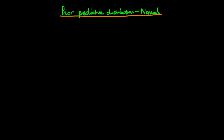In this video, I want to talk about how we can come up with the prior predictive distribution for the test score of an individual within our class, assuming that we have both a normal prior density and a normal likelihood.